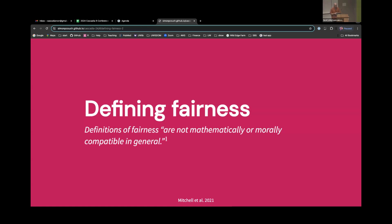So defining fairness is hard. This is kind of one of the most popular quotes from a recent meta-analysis in the field. Definitions of fairness are not mathematically or morally compatible in general. For the mathematicians in the room, there actually is a proof here. It's called the impossibility theorem. And it basically says that if we do indeed live in a world where there are disparities between groups, then different definitions of fairness are, it's impossible to satisfy more than a small fixed set of them.